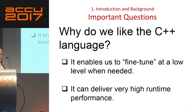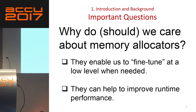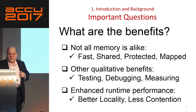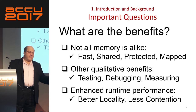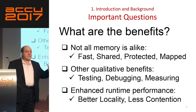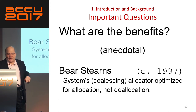So, introduction and background. Here's a tough question: why do we like the C++ language? Here are some things that we might like about C++. Why do or should we care about memory allocators? They're similar. What are the benefits? Well, not all memory is alike. There are other qualitative benefits, like testing and debugging memory. And sometimes you can get enhanced runtime performance. Notice that there are three things going on here — not one, but three. But I'm pretty sure you guys came for the third one, because the first two you all know.